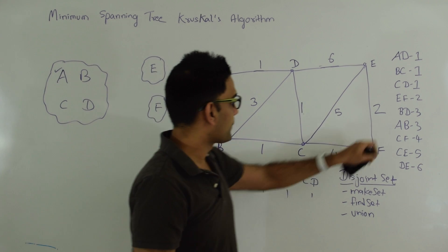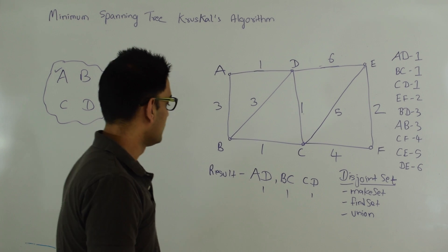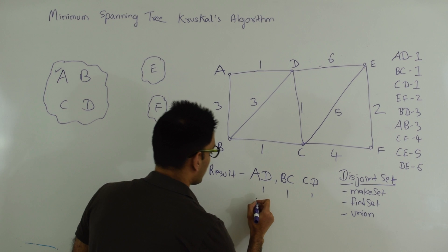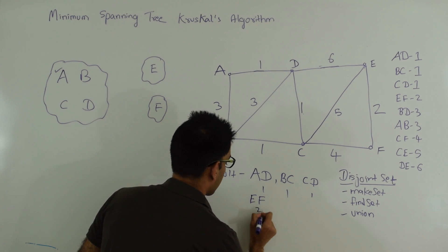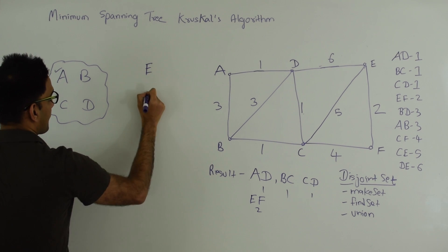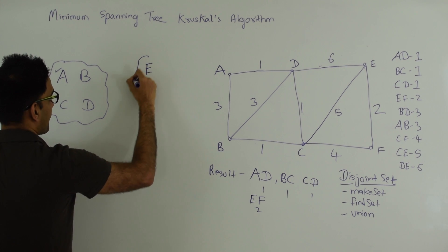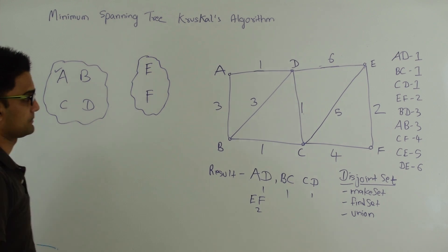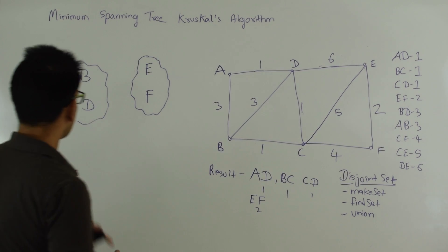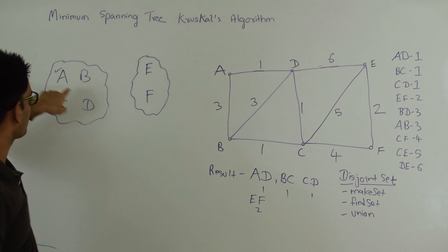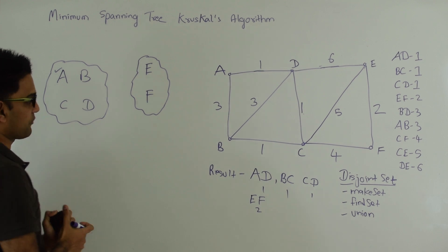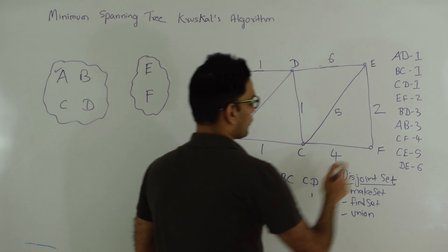Then we're going to pick edge EF. E and F are in two different disjoint sets, so EF is also in the final result, and we do a union of EF. Then we pick the next edge BD. B is represented by A and D is represented by A, which tells us that B and D are in the same disjoint set right now. So we'll just ignore this edge.